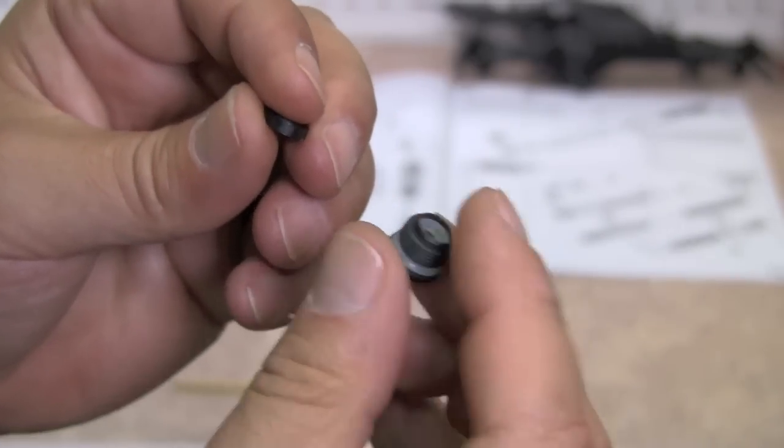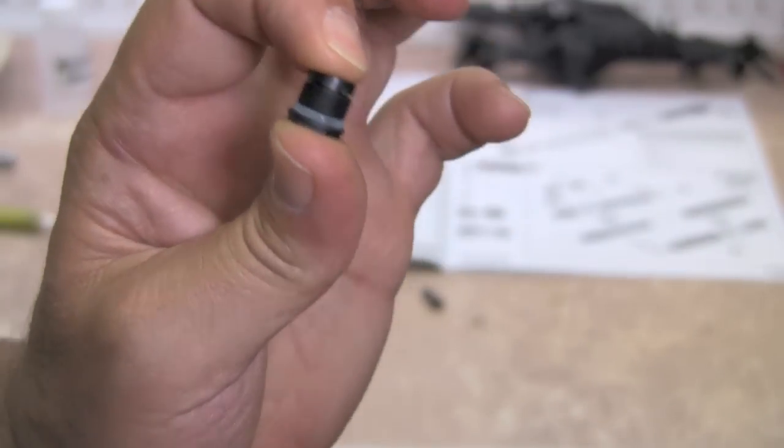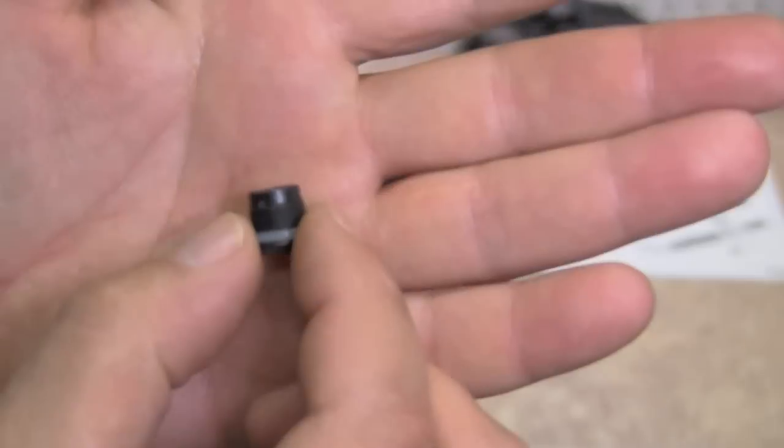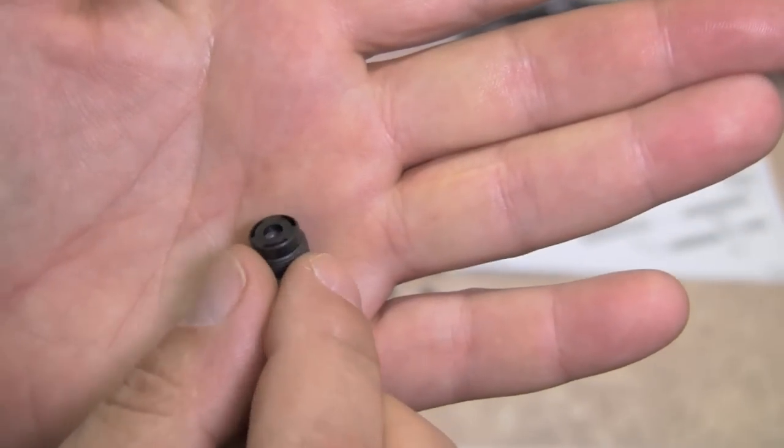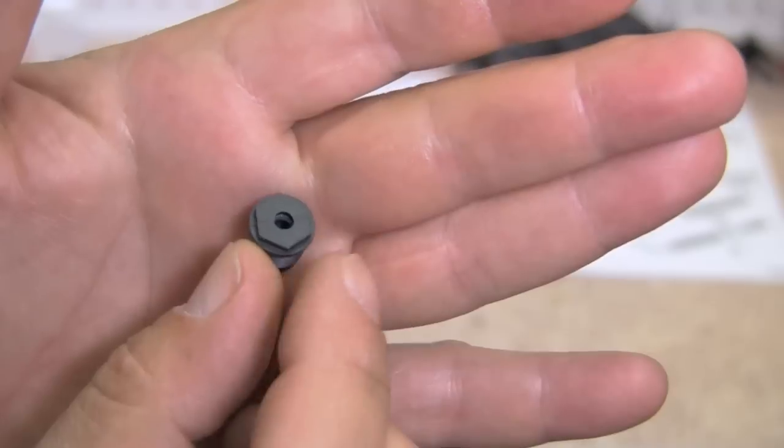We're going to take that, and we're going to push it over the top of our cap until it snaps, and it sets in all the way around. That's what your finished cap is going to look like. Very simple.